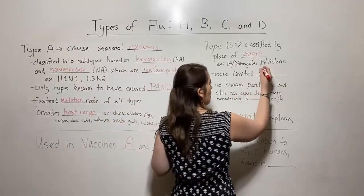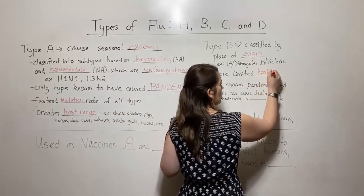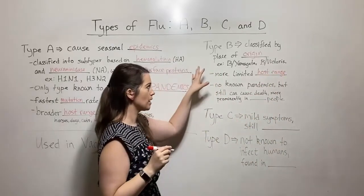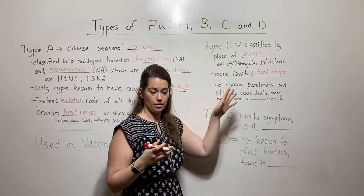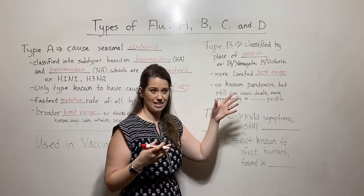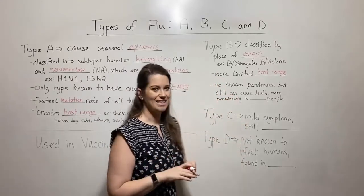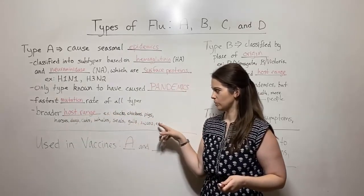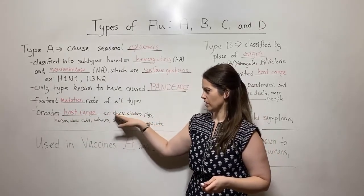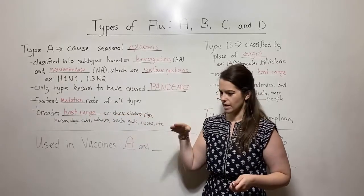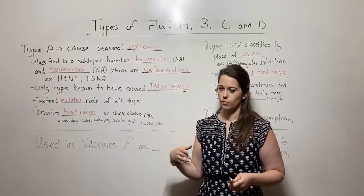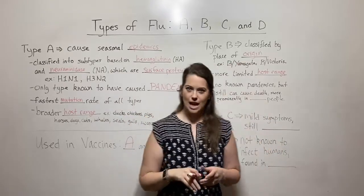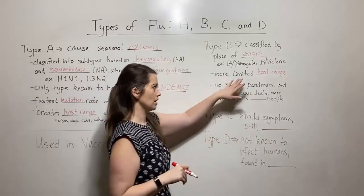And so this one does have a more limited host range. Fun fact, type B flu can still infect some other species. For example, it's been detected in seals. But it doesn't have this big, broad host range, particularly with animals that are often in contact with humans for agricultural practices, like the ducks and the chickens and the pigs. And so it doesn't have the very broad host range. It's much more limited.